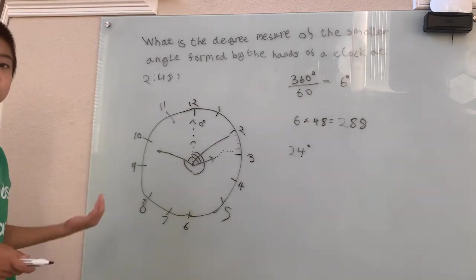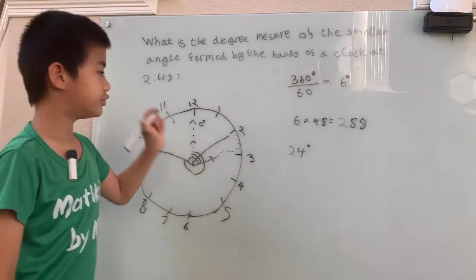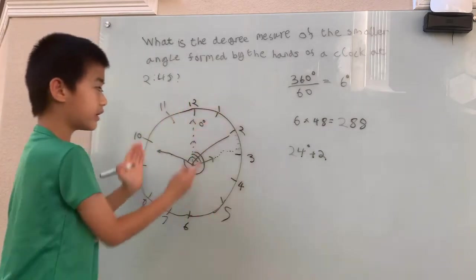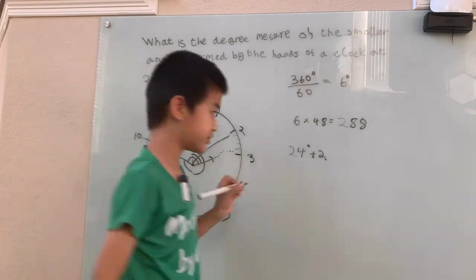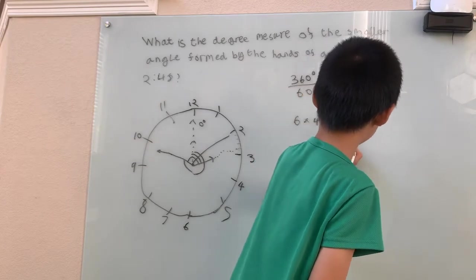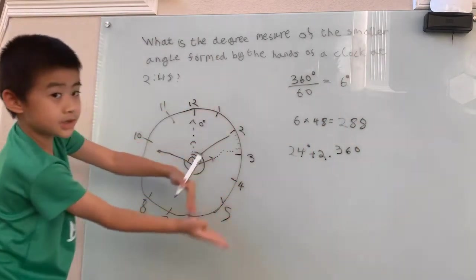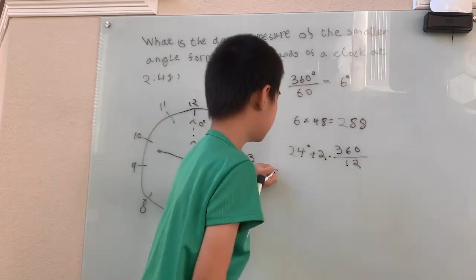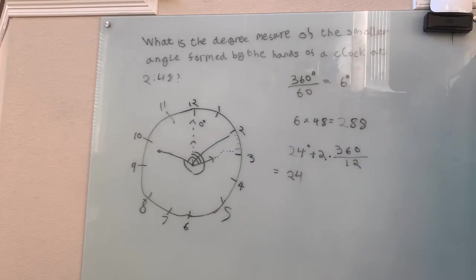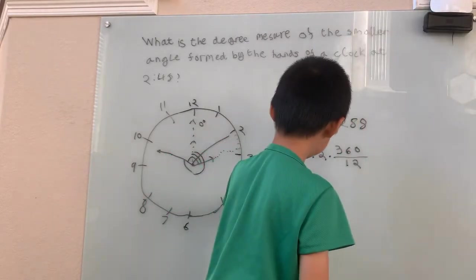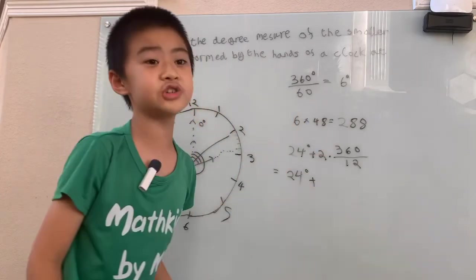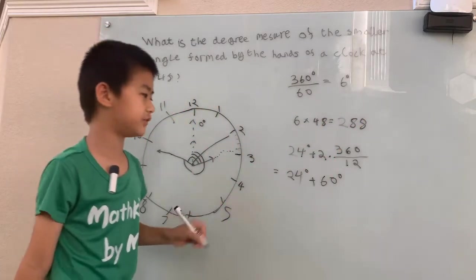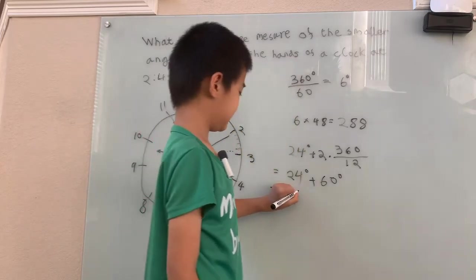We can't forget about this big chunk, this other big chunk of our angle. We have two of these little bits. We can take our whole 360 circle, and since there's 12 of these big chunks in the whole clock, we can divide by 12. 360 divided by 12 is 30 degrees. 2 times 30 degrees is 60 degrees. 24 degrees plus 60 degrees is 84 degrees.